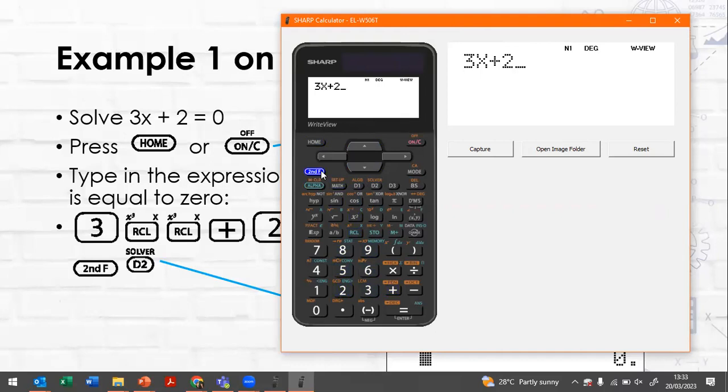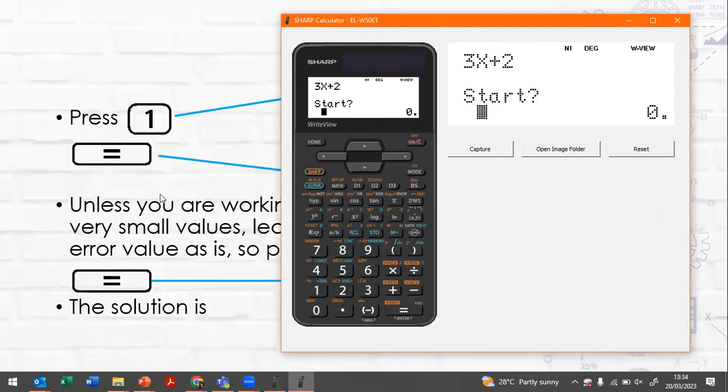Now press second function and your d2 key which says solver on top of it in orange and that will bring up the start function. Now we're going to press 1. We're going to start at 1 and press equals and this is our error value which we'll normally leave as is. Okay, so we'll press equals and you can see that it has solved for x. And if we solve this algebraically, we would see that it is negative 2 over 3 which is the same as this decimal solution.